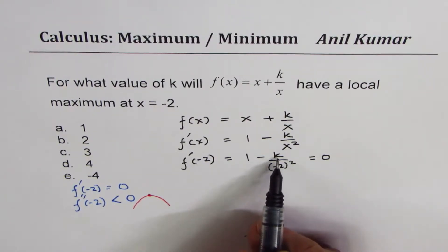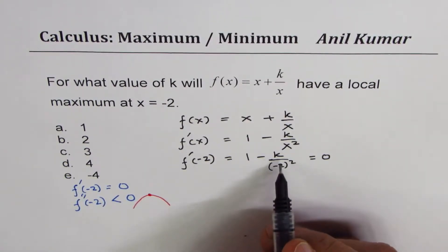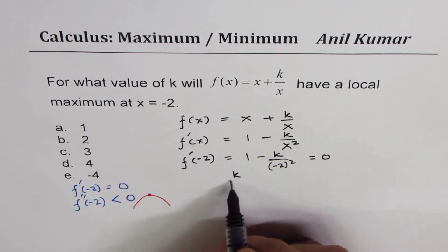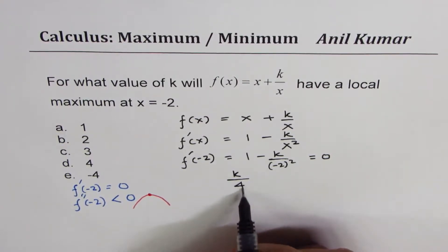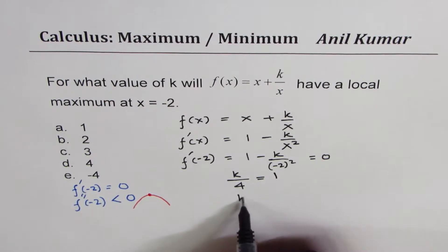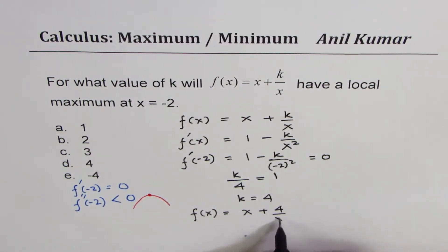So this will help us to find the value of k. We can write this as k/4 = 1 and therefore k = 4. So that gives you a value of k as 4. So we get the function f(x) = x + 4/x.